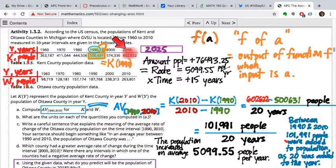76,493. Based on our information, we would expect the population to have changed in that 15-year period by this many people. This many more people should have been added to the population of Kent County between 2010 and 2025. So how do I find the population in 2025?